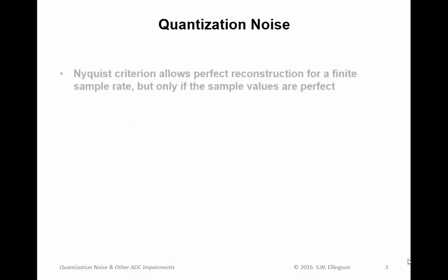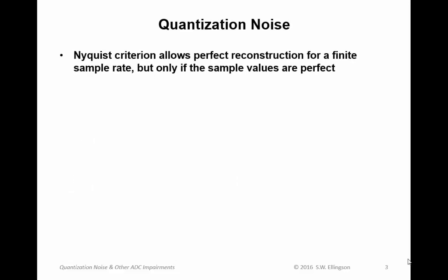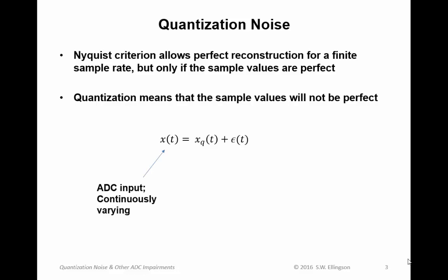So first, quantization noise. Nyquist criterion allows perfect reconstruction for a finite sample rate, but only if the sample values are perfect. Quantization means that the sample values will not be perfect. One way we can analyze this is using the following equation, in which x(t) is the input to the analog-to-digital converter, which is continuously varying.